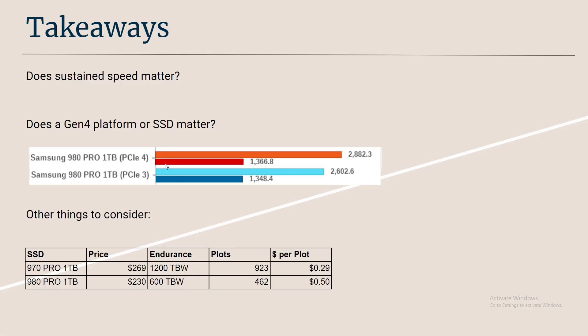Does a Gen 4 platform SSD matter? I don't think it matters that much. Looking at the sustained speed results, Gen 3 versus Gen 4 performance doesn't show much difference, and the 980 Pro never hits its Gen 4 peak speed of about 7,000 MB/s. So if you have a Gen 3 platform, there's really no point upgrading to Gen 4 for Chia plotting — though I could be proven wrong with the Mad Max plotter.